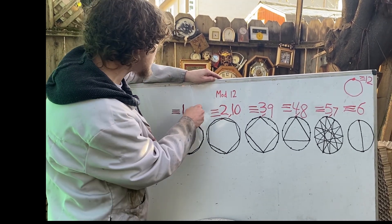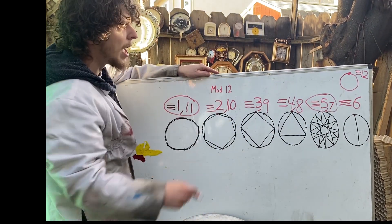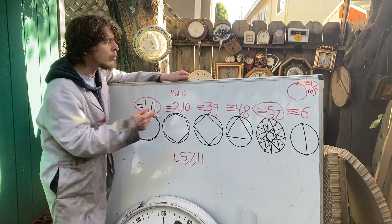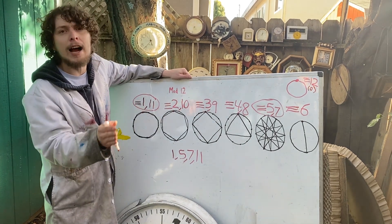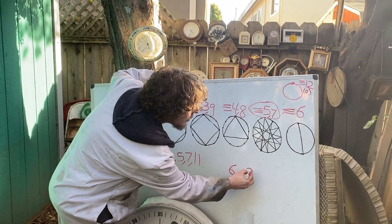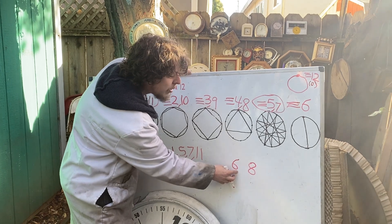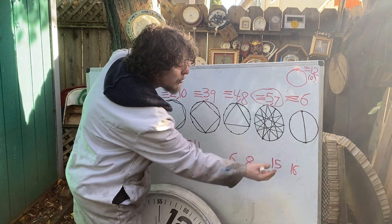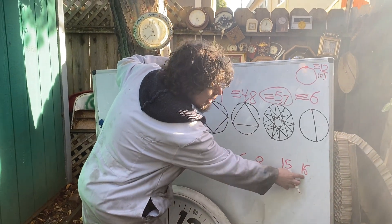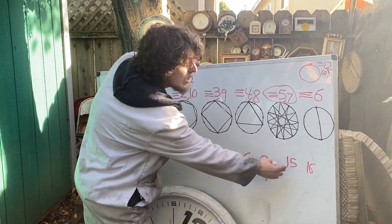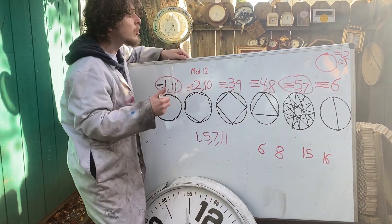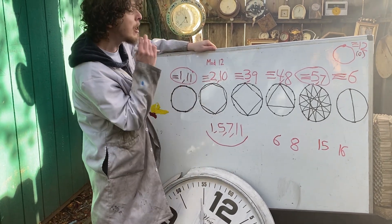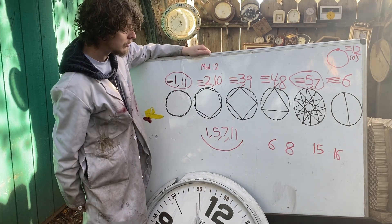What's special about 1, 5, 7, and 11 in relation to 12? These are the integers smaller than 12 that are co-prime to 12. Numbers being co-prime to something means they have no common factors greater than 1. For example, 6 and 8 are not co-prime because they share a factor of 2, whereas 15 and 16 are co-prime: 16 is made of 2s and 15 is 3 times 5, so they share no factors greater than 1.